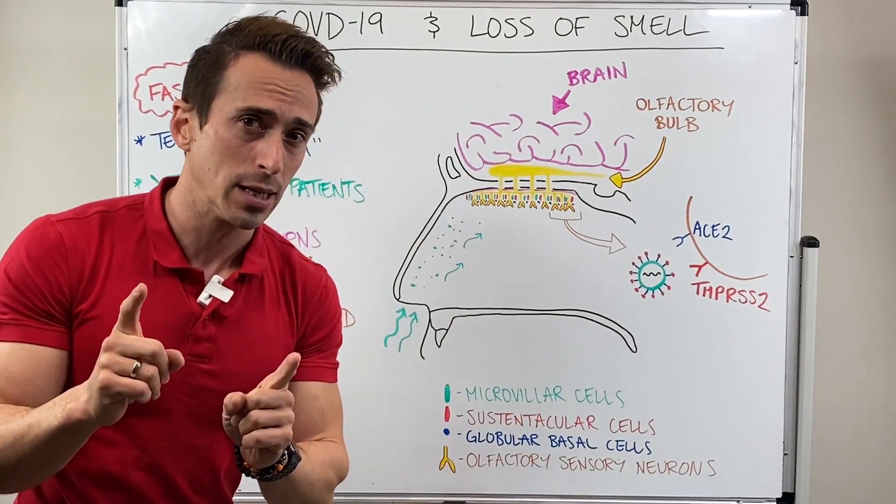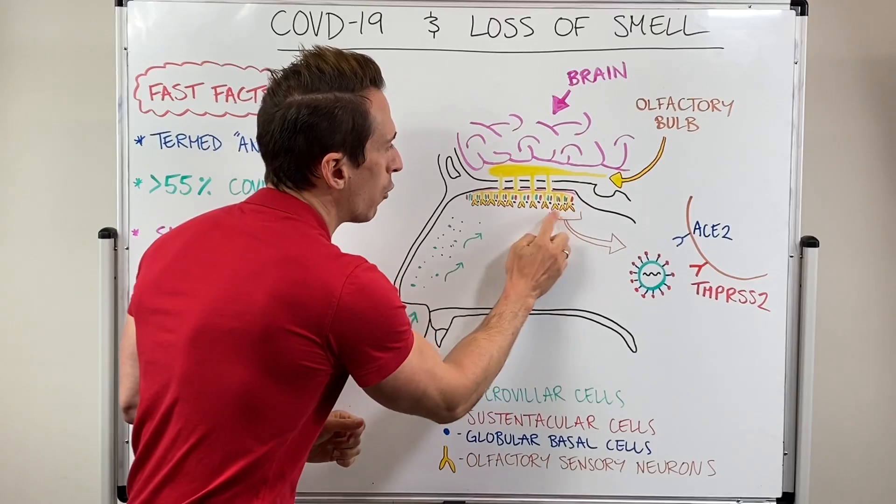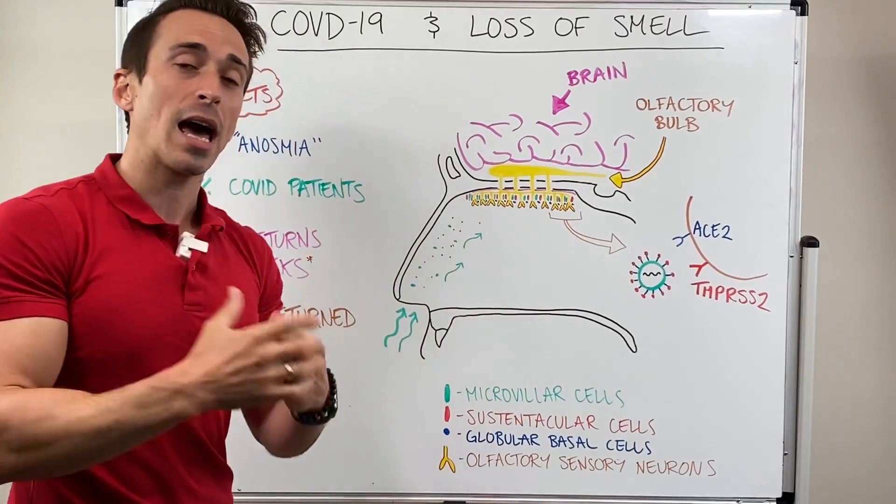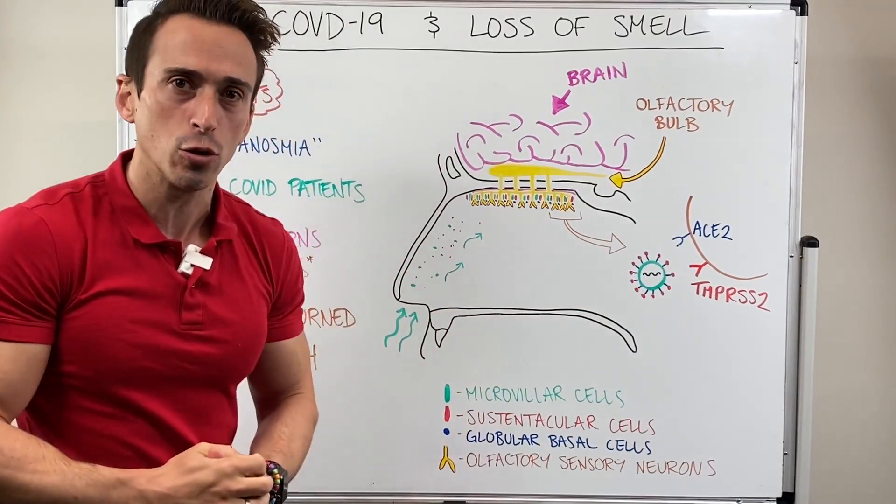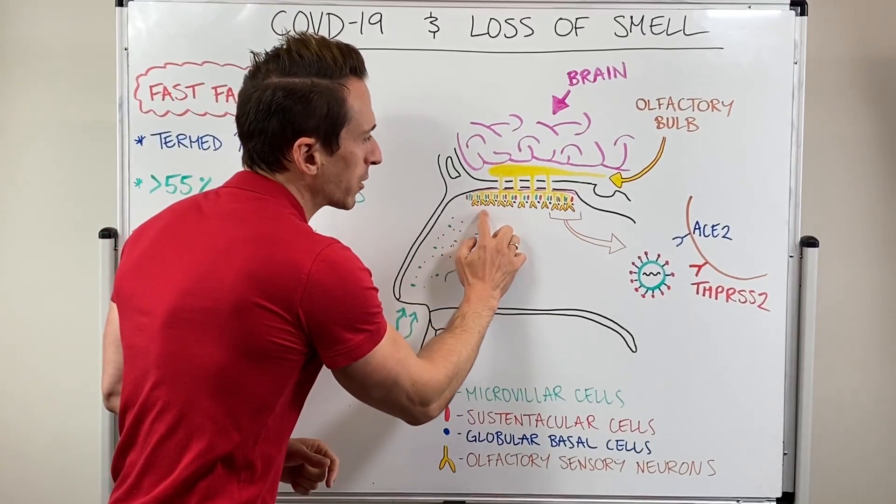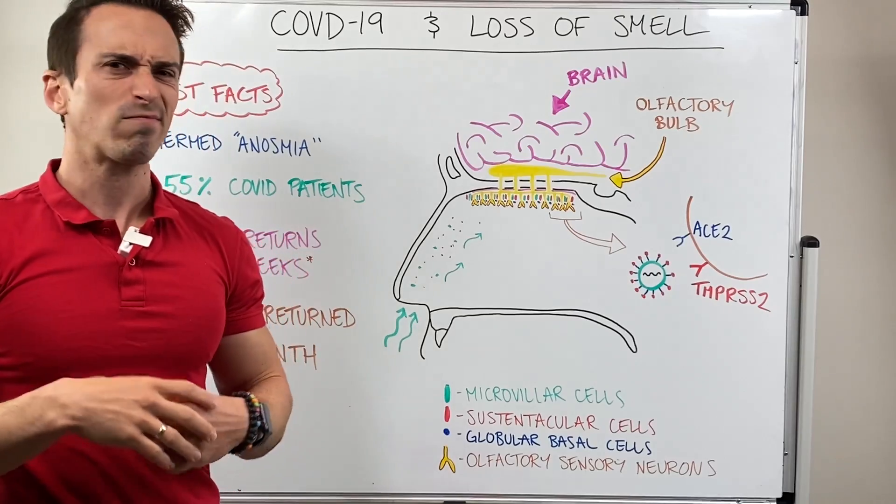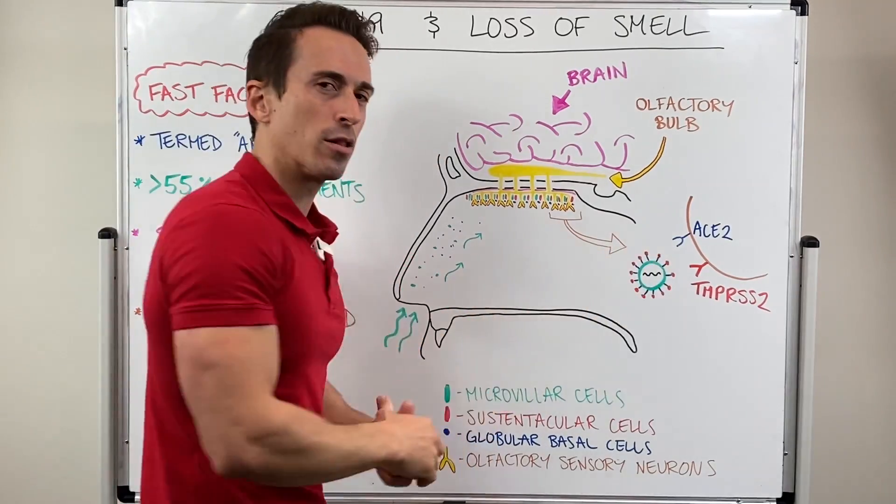A most recent paper in August 2020 looked at the cells of the olfactory epithelium and the expression levels of these two particular receptors. What they found was the olfactory sensory neurons, those that pick up the odorants for the sense of smell, they don't really express those two.